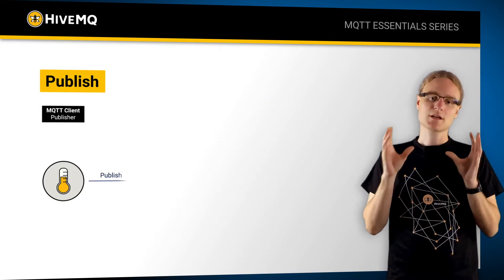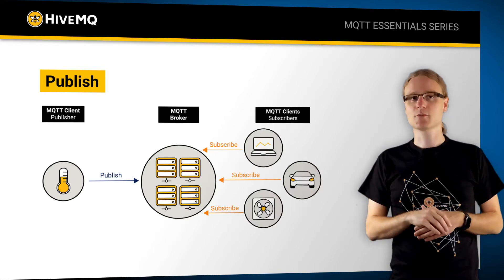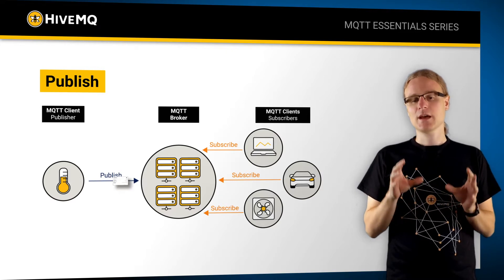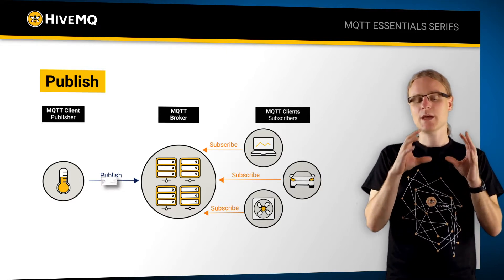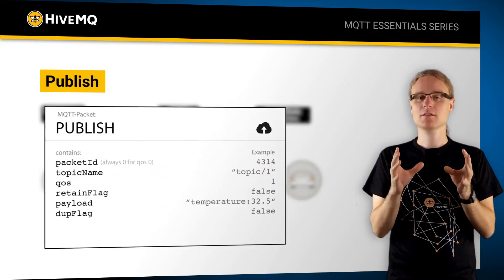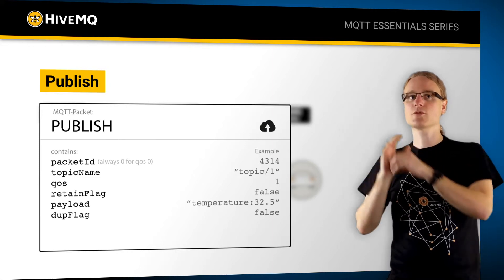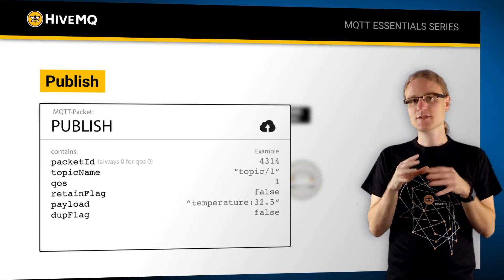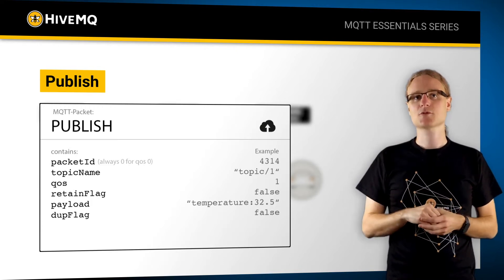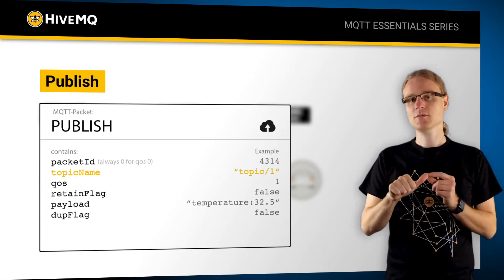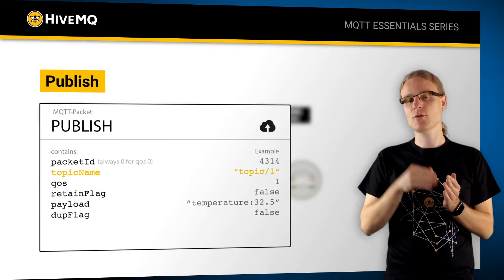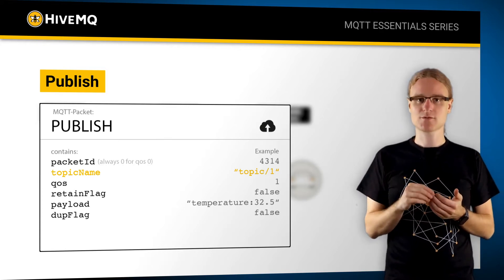As soon as a client has a connection established with the broker, it can start producing messages. The MQTT client produces a so-called MQTT publish packet and sends it to the broker. This packet has mandatory information that a client must provide, and this is the topic name. A topic is basically a text-based string with delimiters, and this is used for message filtering.